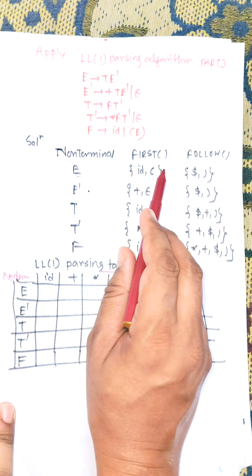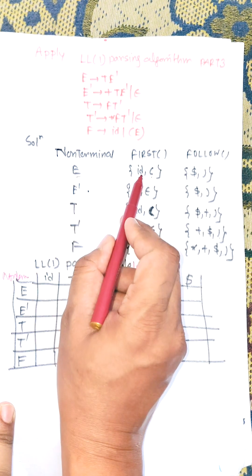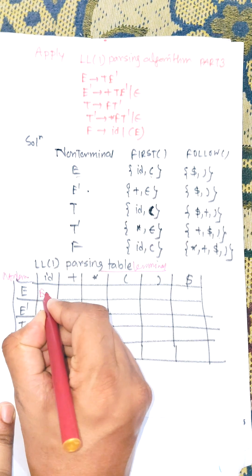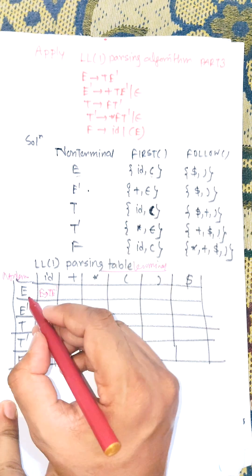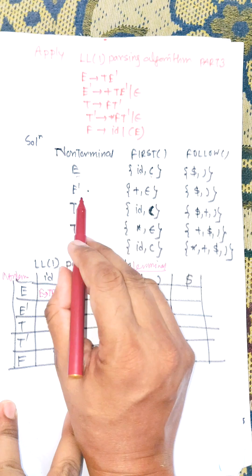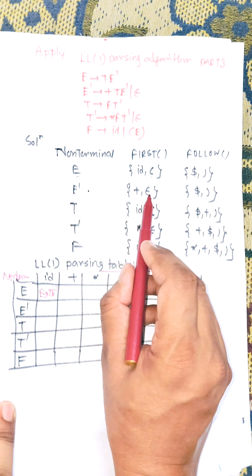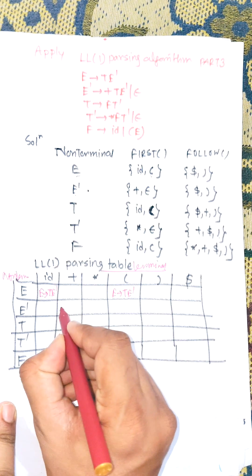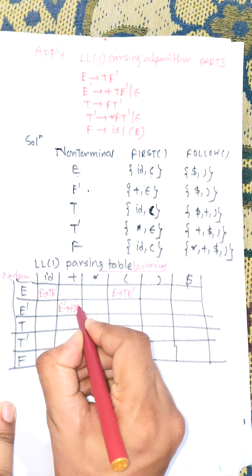We consider FIRST(E), which is {id, '('}. So the production E → TE' is applied in the column for id, and also in the column for '(', giving E → TE'. For non-terminal E', FIRST(E') contains + and ε. For +, we apply E' → +TE'.